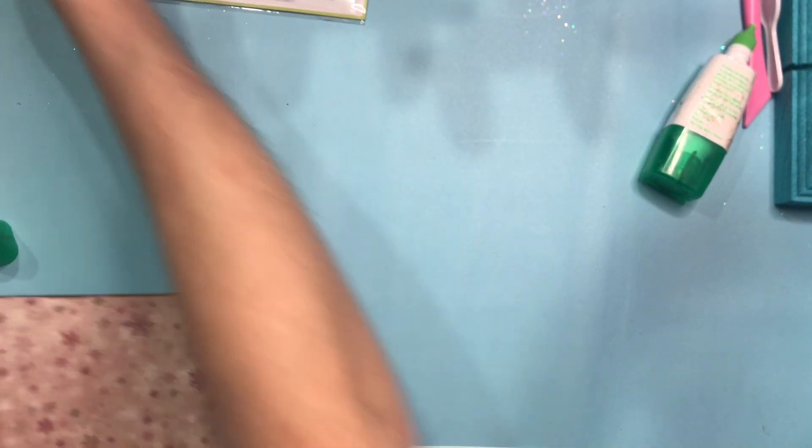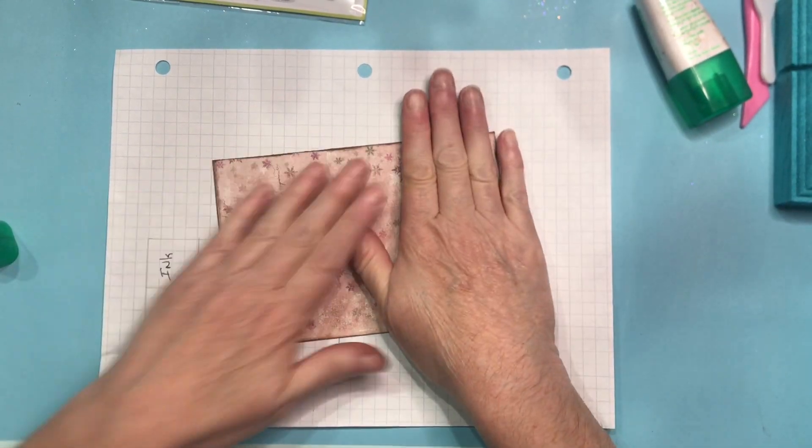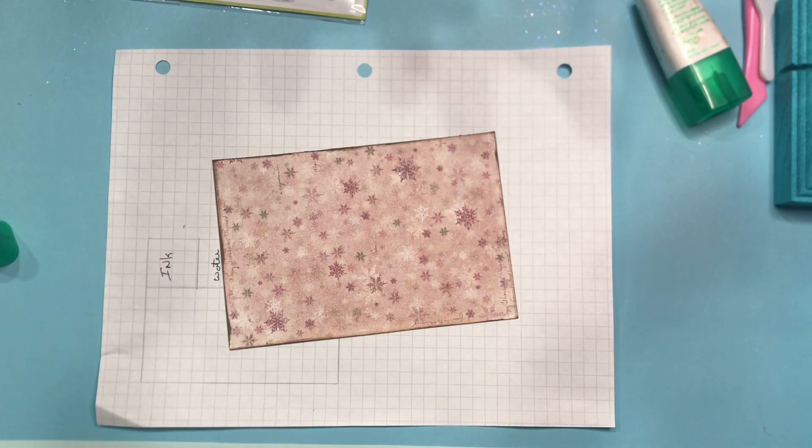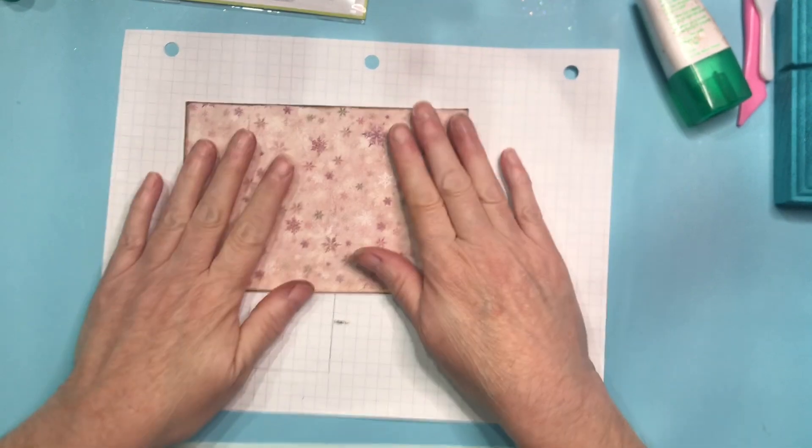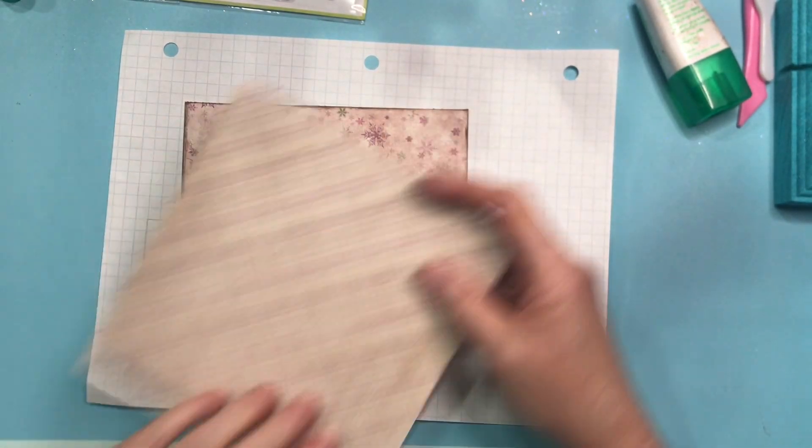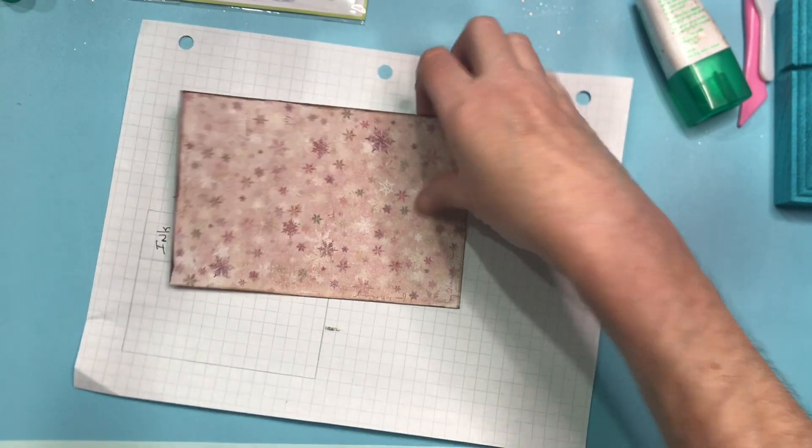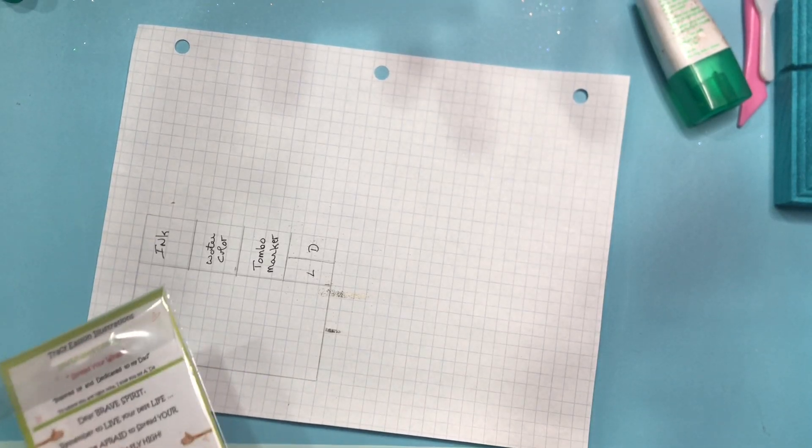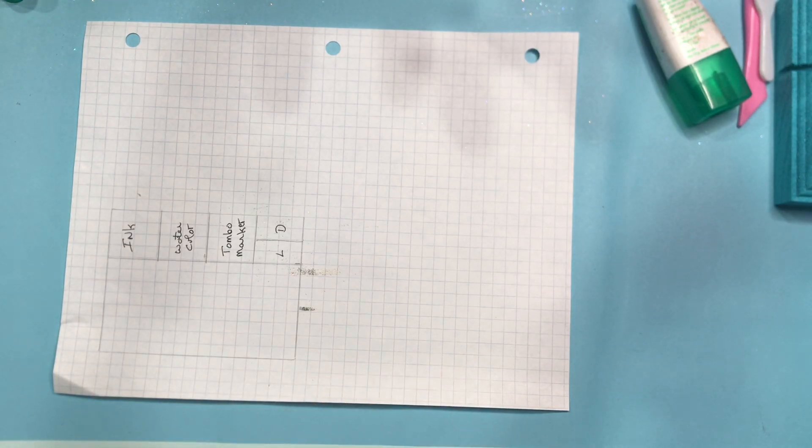So I'm just going to squiggle this out because I wanted the snowy side on this. And I'm not sure if there's really a right side up, upside down piece of this. So we're just going to go with it.